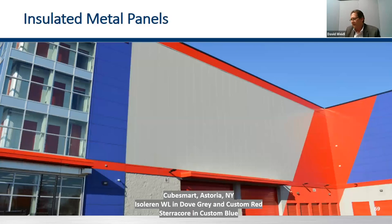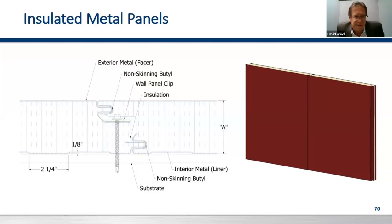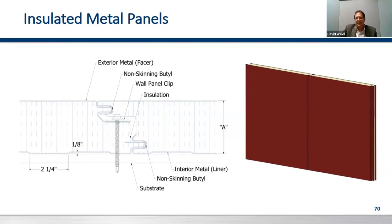With insulated metal panels, we're seeing tremendous growth in this market. The nice thing is they give you continuous insulation, vapor barrier, weather barrier, R-value, and an exterior metal face all in one product. If you don't like the look of the metal facer, we're now seeing barrier backup systems where other metal panels, block, or thin-faced brick masonry are placed on top to dress it up so it doesn't look like a freezer.